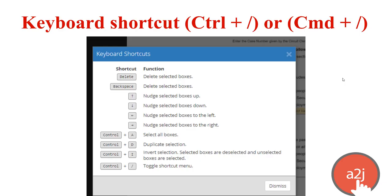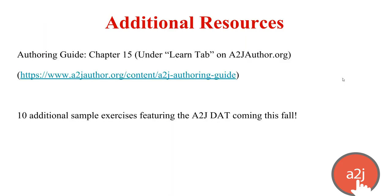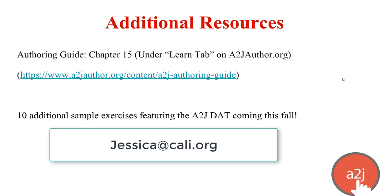There are keyboard shortcuts built into PDF templates, accessible with Ctrl+/ on Windows or Command+/ on Mac. These allow you to delete selected boxes and move boxes around — particularly helpful when drawing boxes over checkbox areas. Additional resources are available under chapter 15 of the authoring guide, and 10 sample exercises featuring the A2J DAT are coming this fall. If you have any questions, feel free to email jessica@cali.org. Thank you.